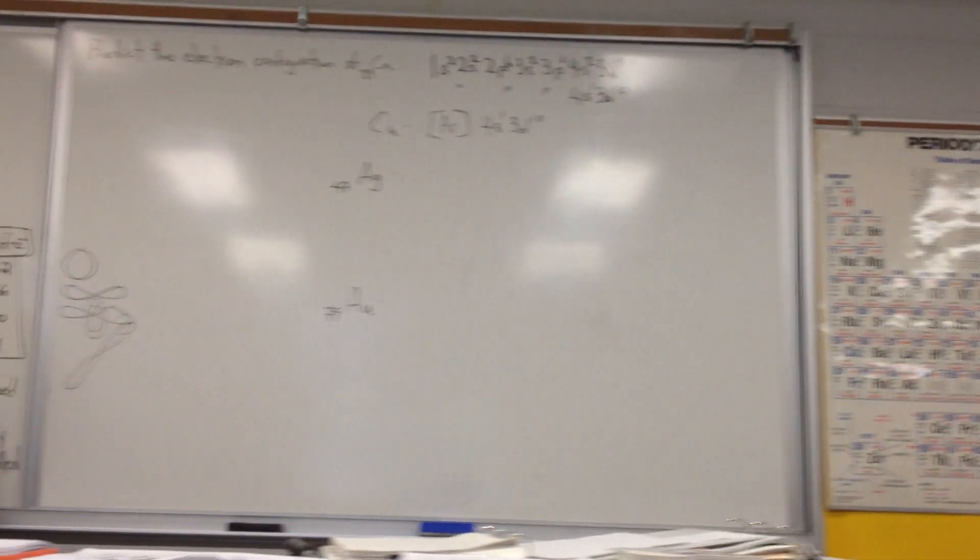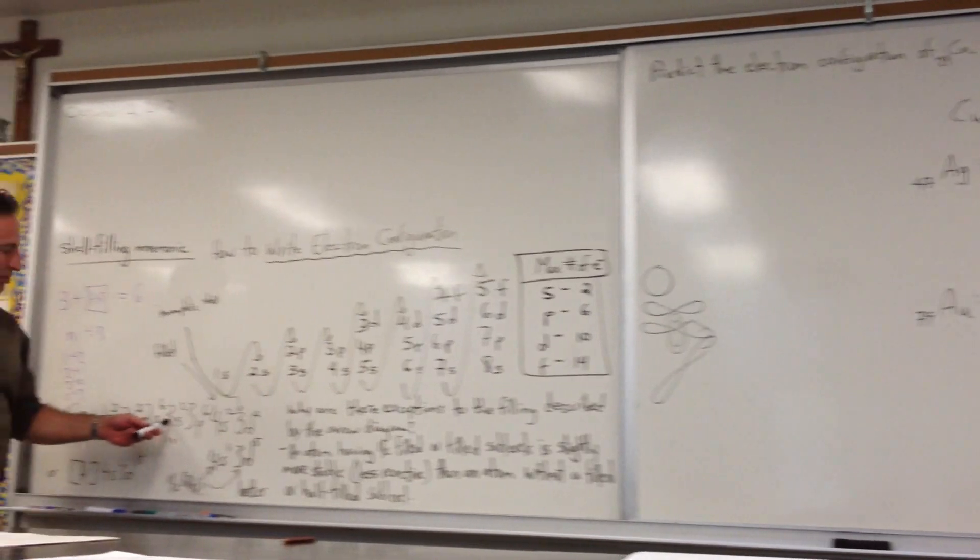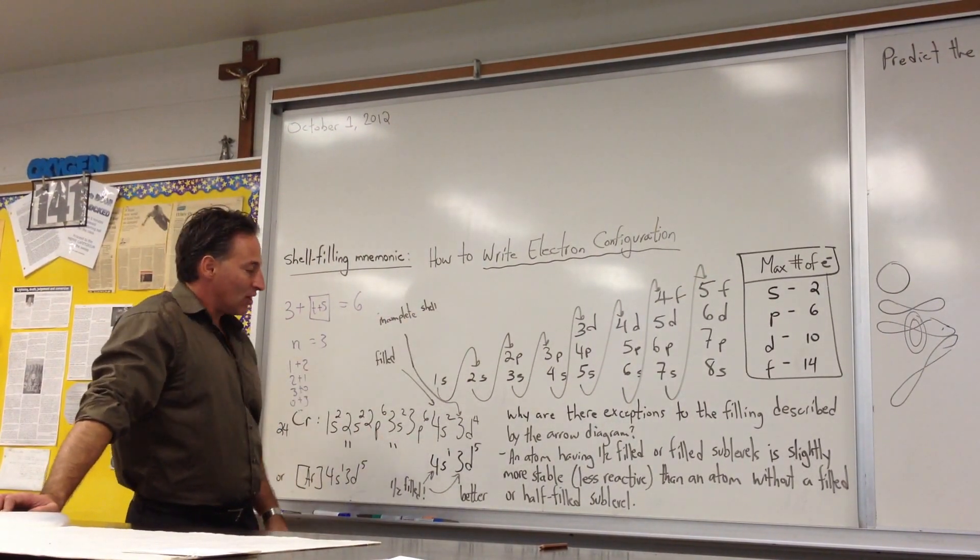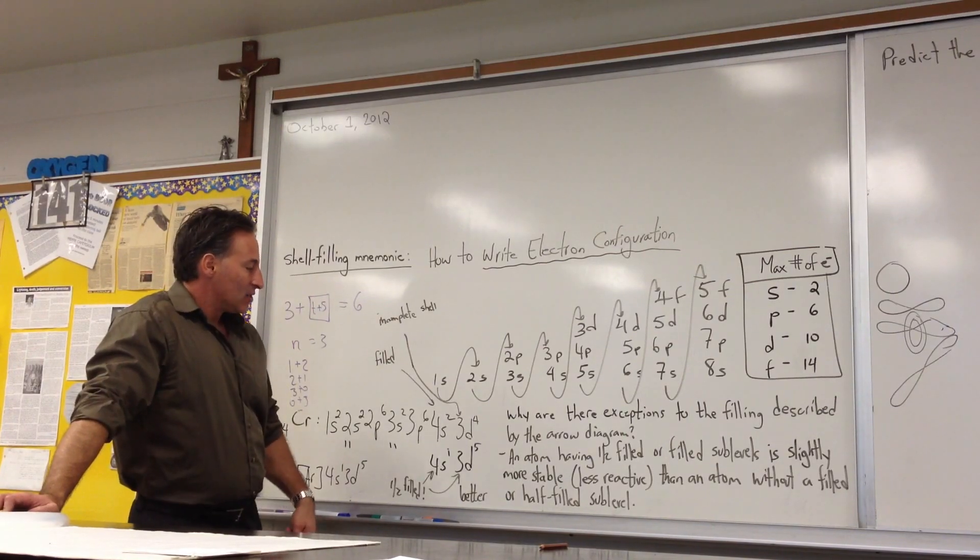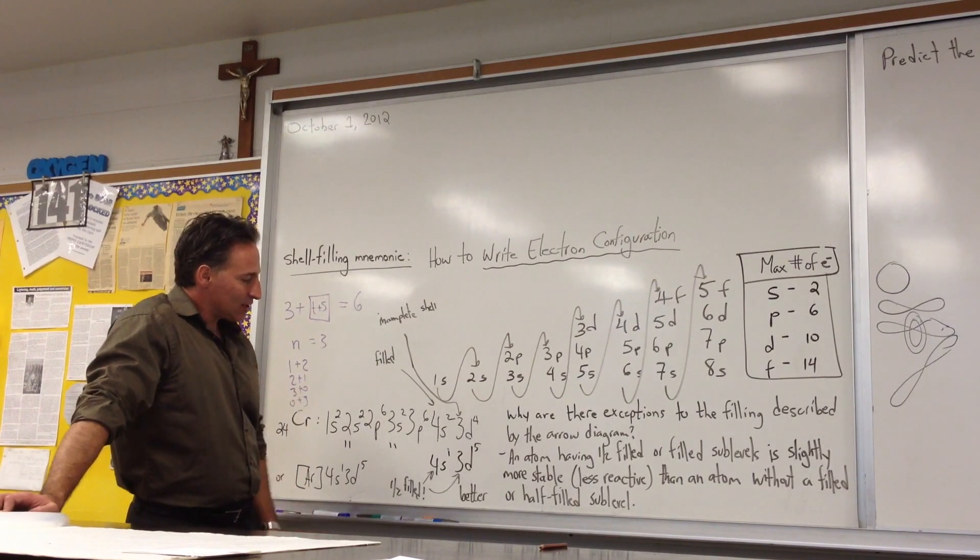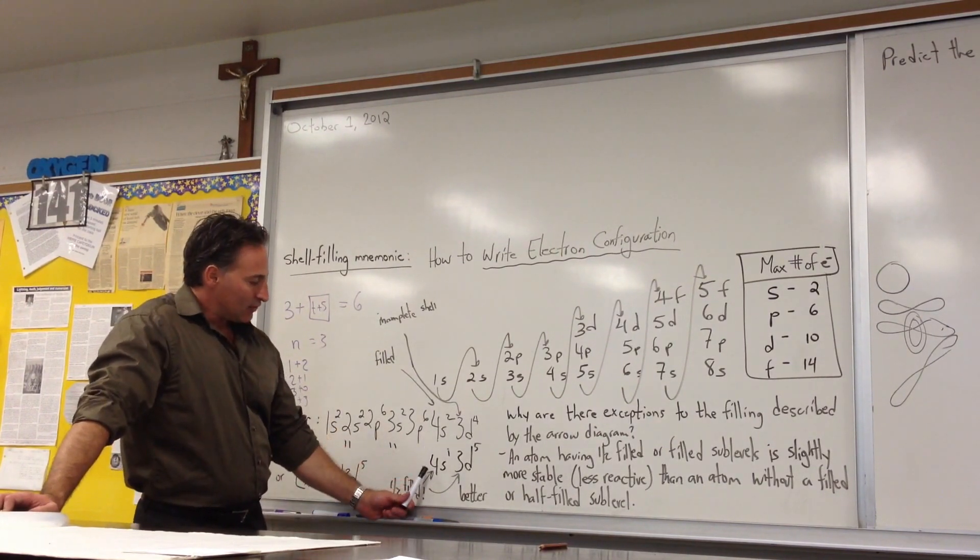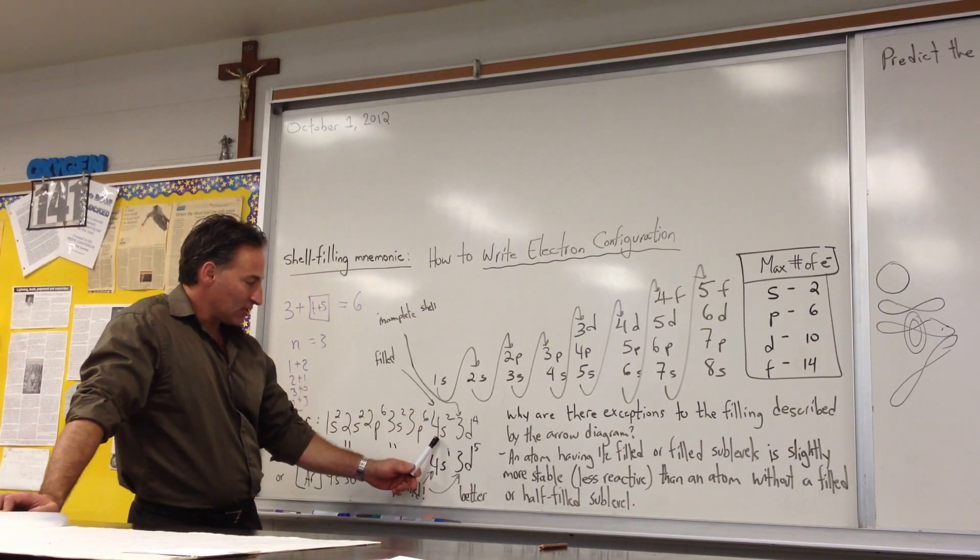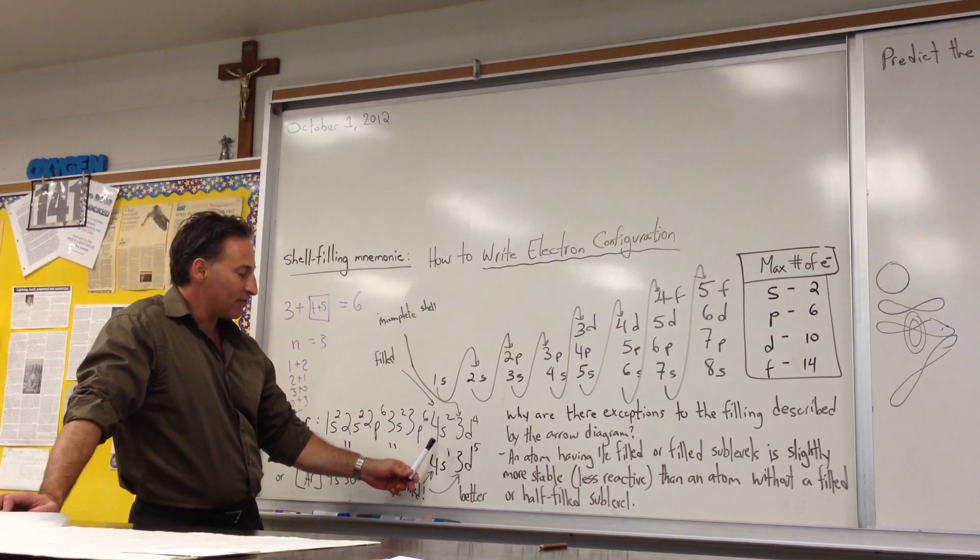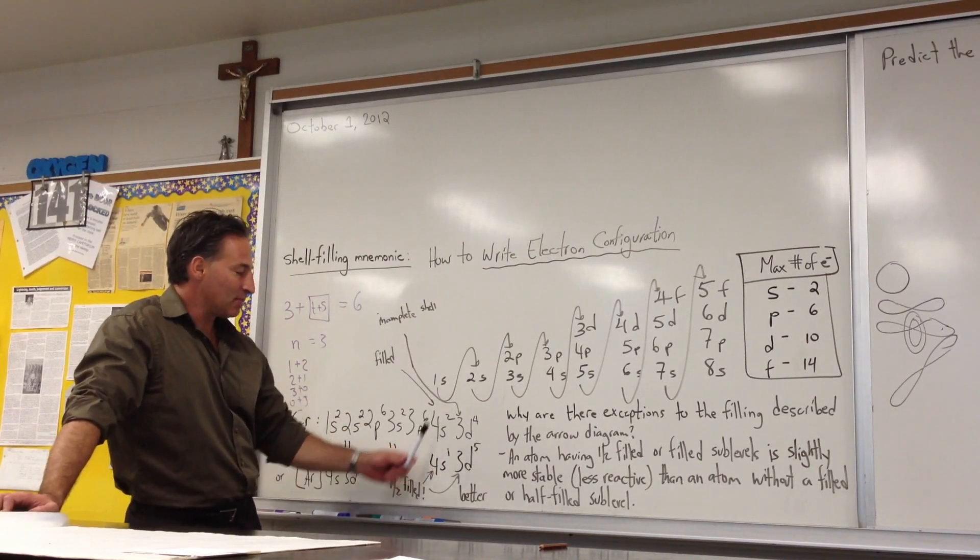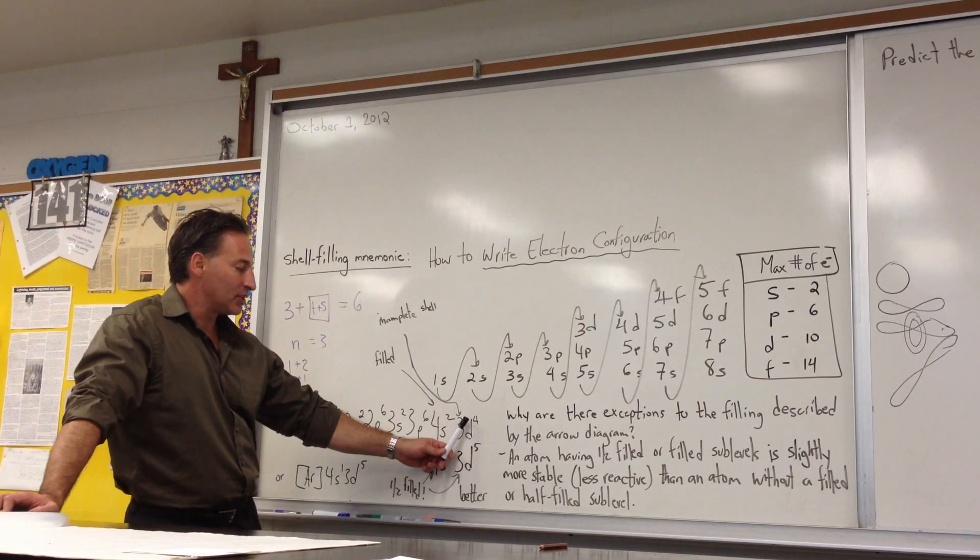Moving back to chromium, once we get to 4s2, we know that there's four more electrons to add to the diagram. So it ends up being 3d4, as predicted by this diagram. But as it turns out, it's actually 4s1, 3d5. Why is that? Because half-filled shells are more stable than a full shell, if you can get two of them. So you have two half-filled shells, that's more stable than a filled shell and an incomplete shell.